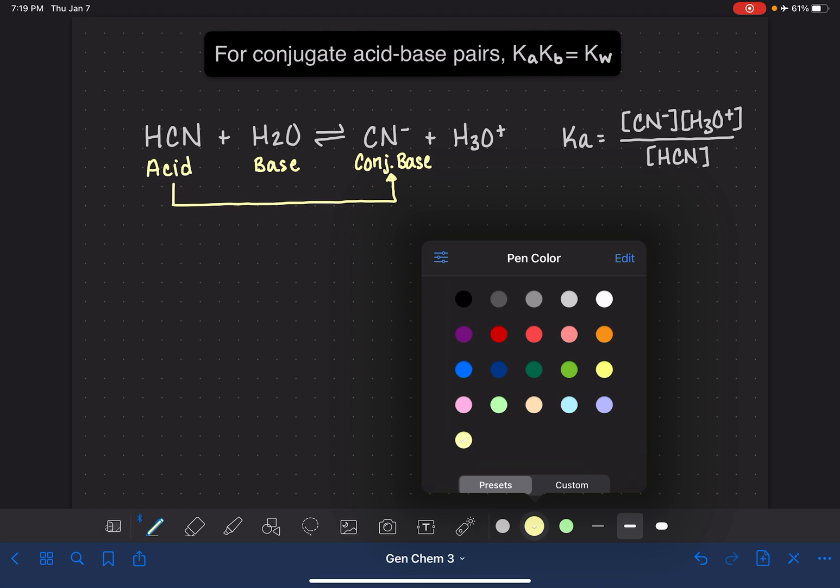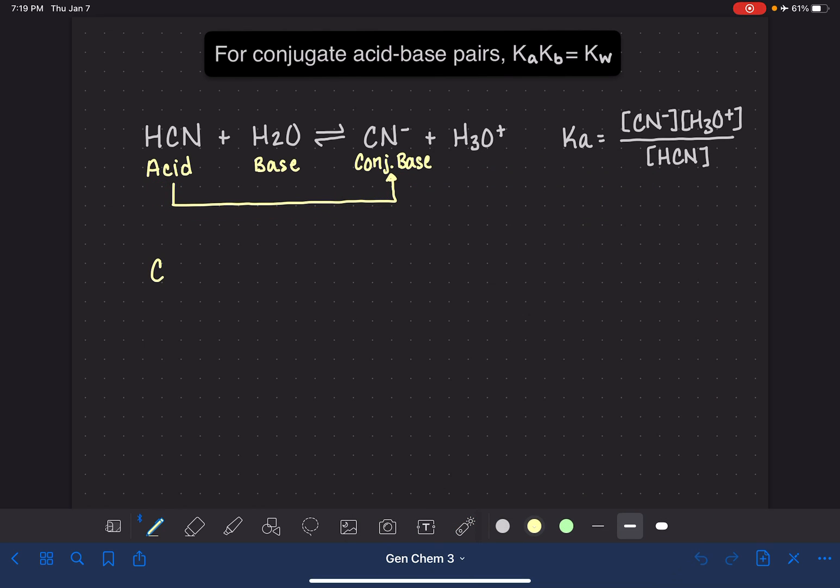Let's write another equation, this time for cyanide, the conjugate base of HCN. We're going to write the reaction for cyanide reacting with water, looking at cyanide's ability to be a base all by itself. Cyanide as a base is going to grab the H-plus ion from water, making HCN and leaving water as OH-.